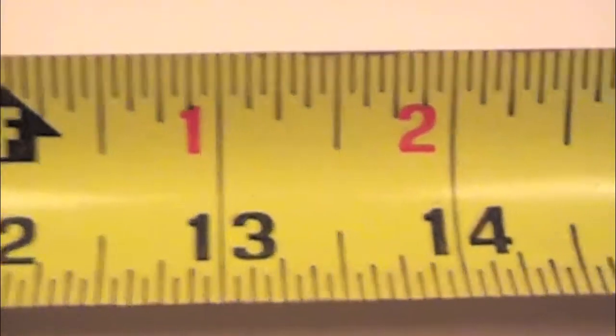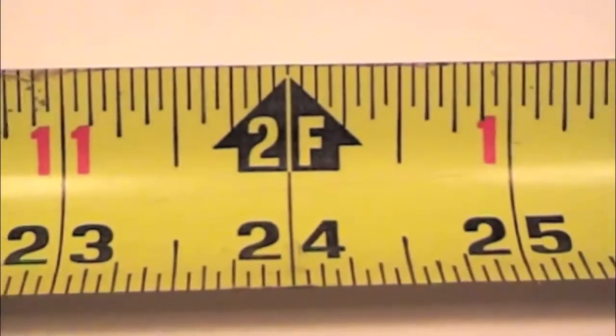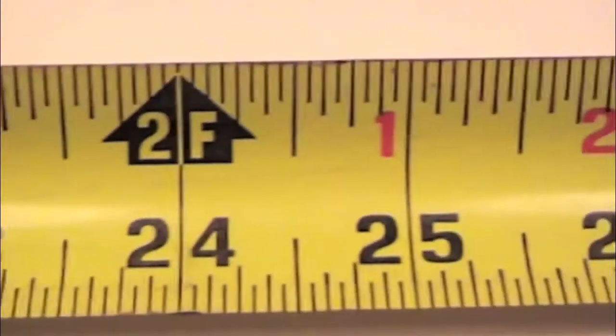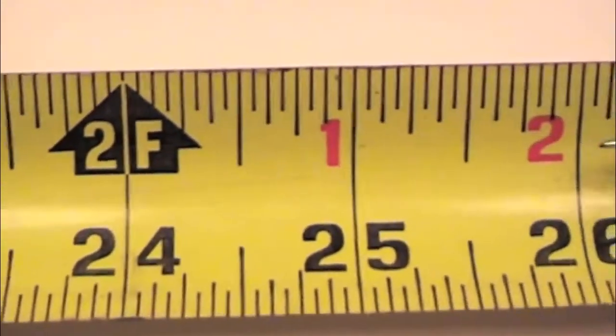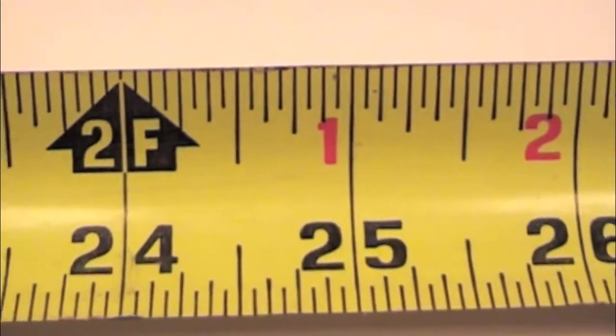The entire tape measure continues, as we'll see when we get to two feet. We have two feet, or twenty-four inches, two foot one inch, and so on. So we can find these measurements quickly.